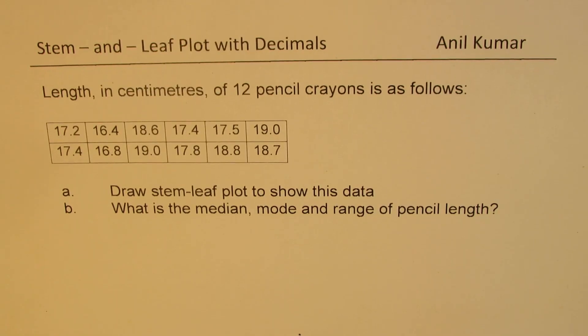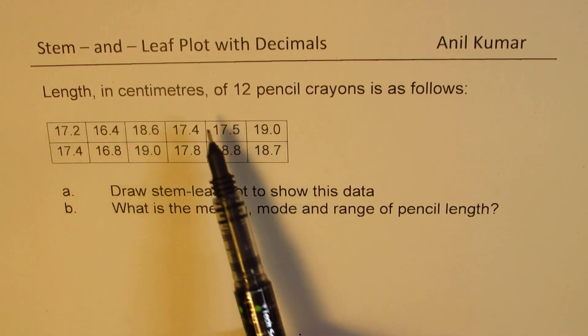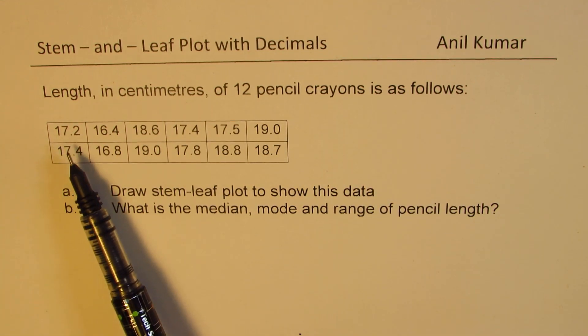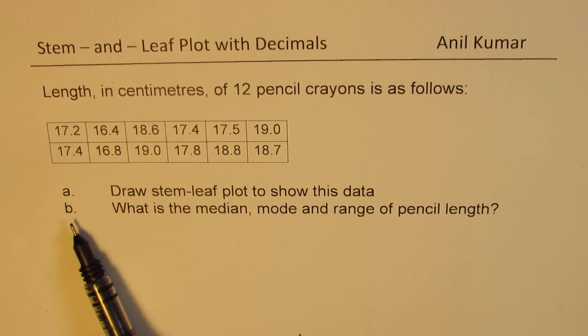I'm Anil Kumar, welcome to my series of displaying data. In this video we'll try to understand how to display group data given in decimal values in the form of stem and leaf plots. The question here is length in centimeters of 12 pencil crayons is as follows: 17.2, 16.4 and so on.